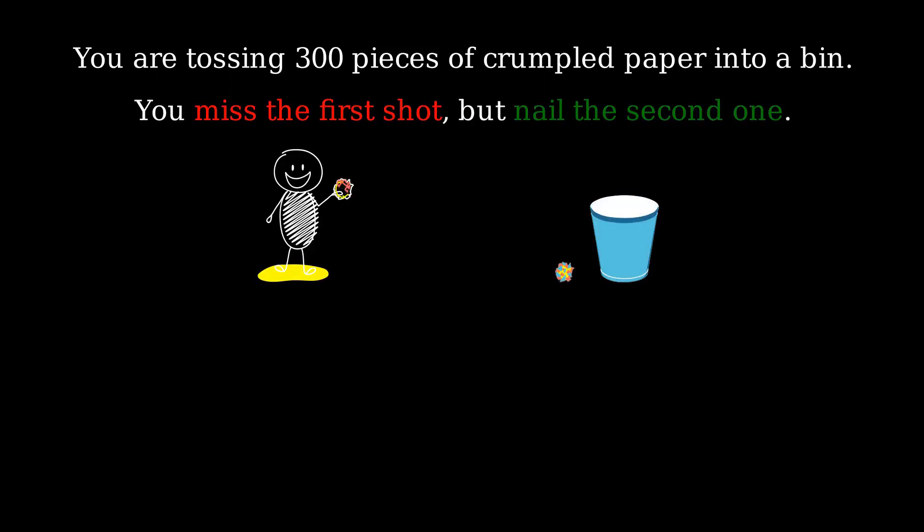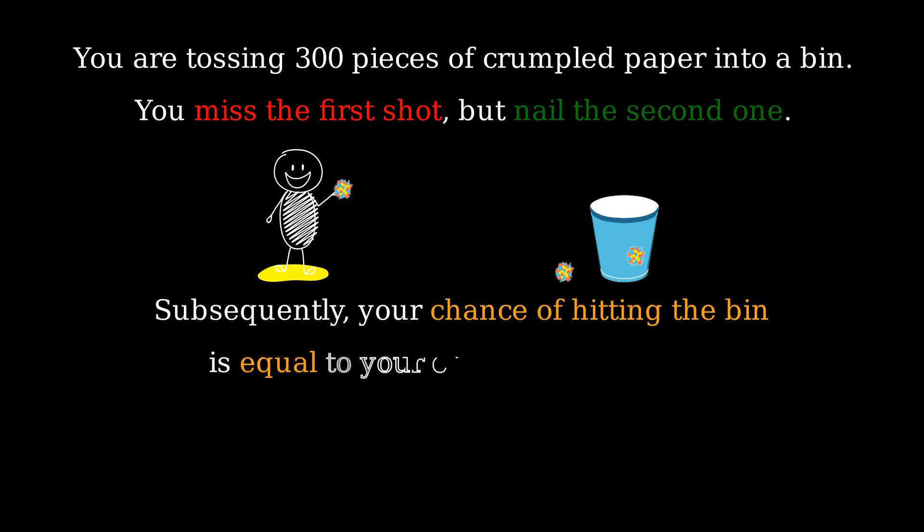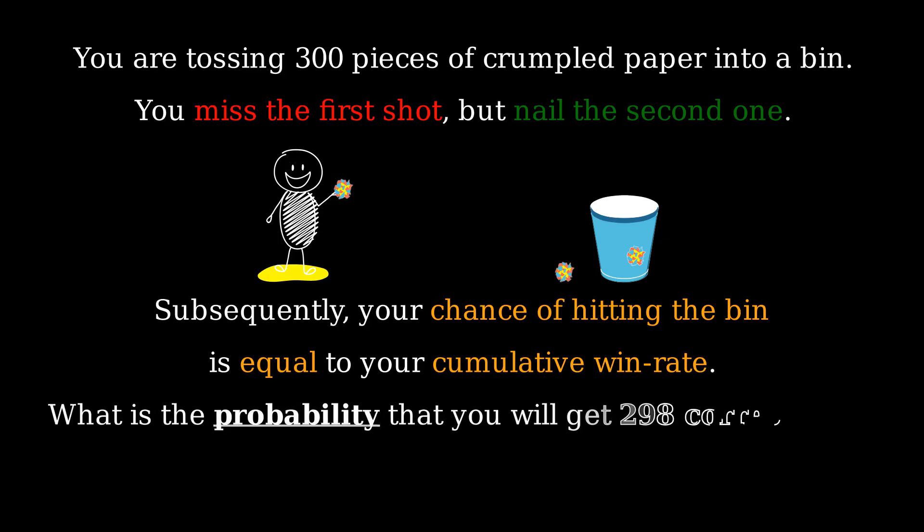You are tossing 300 pieces of crumpled paper into a bin. You missed the first but nailed the second one. Subsequently, your chance of hitting the bin is your cumulative win rate. What is the probability that you hit the bin 298 times?